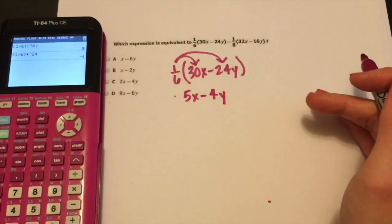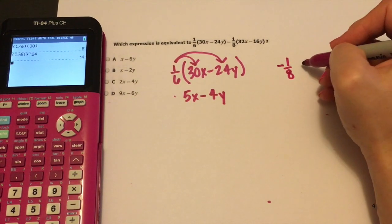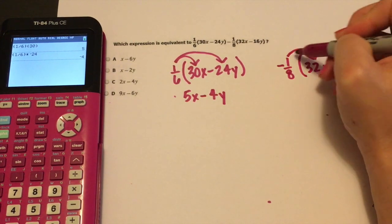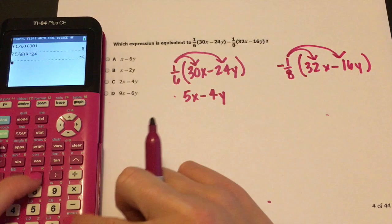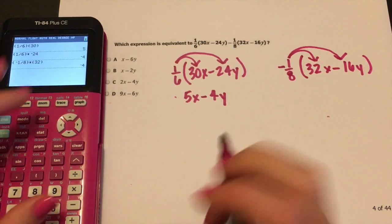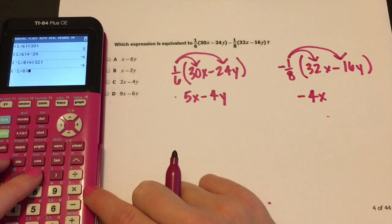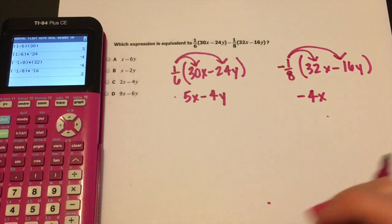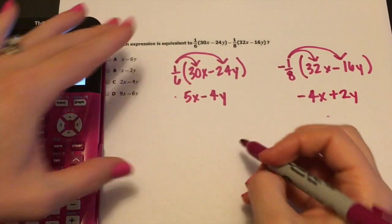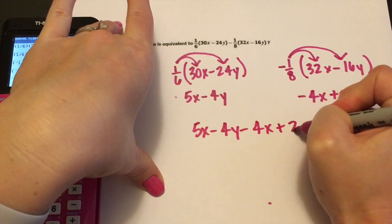Let's do the other part of it. Negative one eighth. Notice I wrote this as a negative. And then 32 X minus 16 Y. You're going to distribute like this. So again, negative one eighth times 32. That's a negative four X and then negative one eighth times a negative 16. Notice that's positive. So I'm going to write positive two Y.